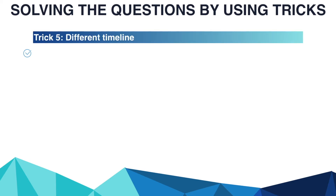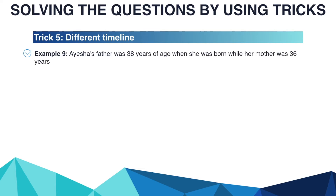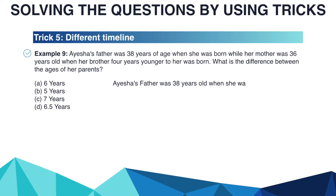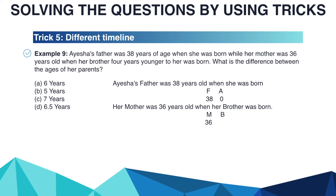The last trick is 'different timelines.' Aisha's father was 38 years of age when she was born, while her mother was 36 years old when her brother — 4 years younger to her — was born. What is the difference between the ages of her parents? Options are A: 6 years, B: 5 years, C: 7 years, D: 6.5 years. Aisha's father was 38 when she was born, so F = 38, A = 0. Her mother was 36 when her brother was born, so M = 36, B = 0. Her brother is 4 years younger, so when B = 0, A = 4.